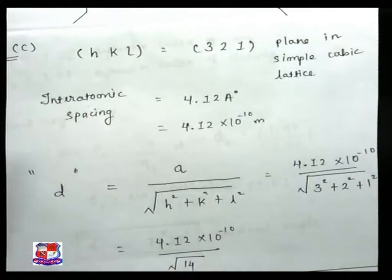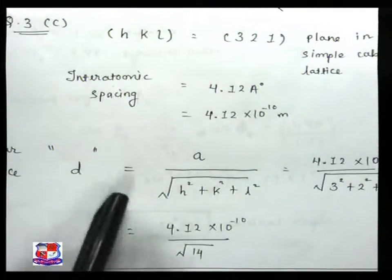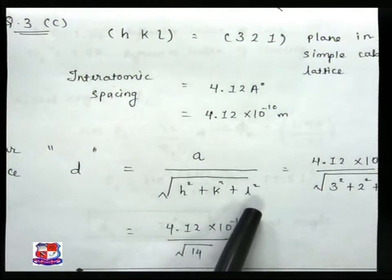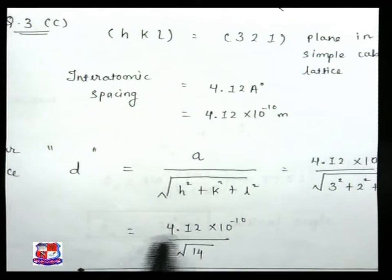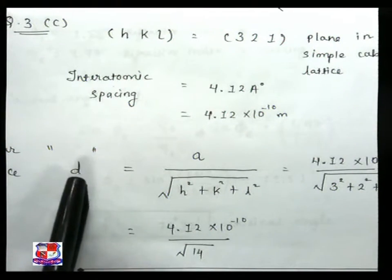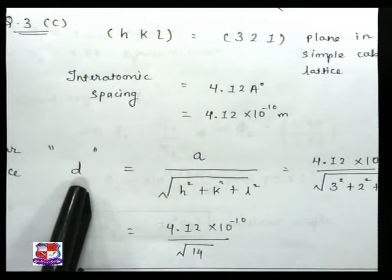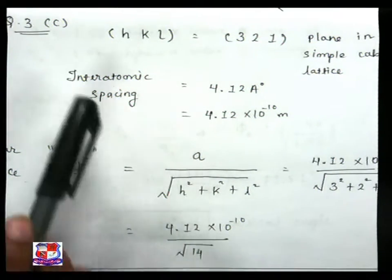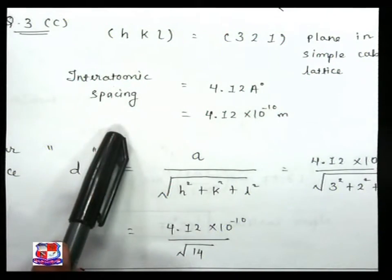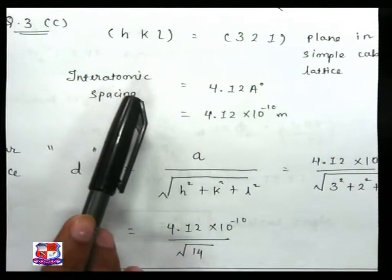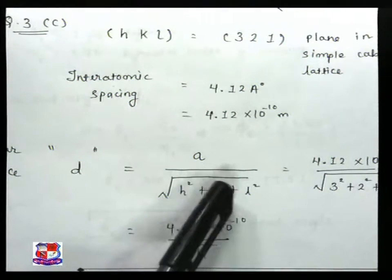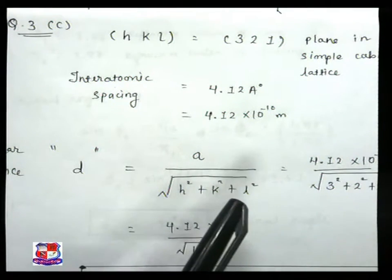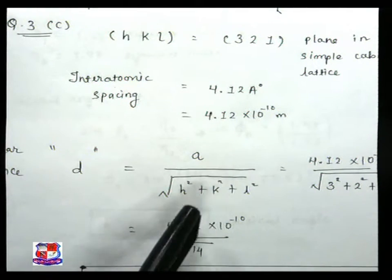Here you are seeing the equation d is equal to a upon under root h square plus k square plus l square. My dear friends, this is the equation to find out the interatomic distance. Here d represents the interatomic distance, a is the interatomic spacing, and h square plus k square plus l square represents the Miller indices.